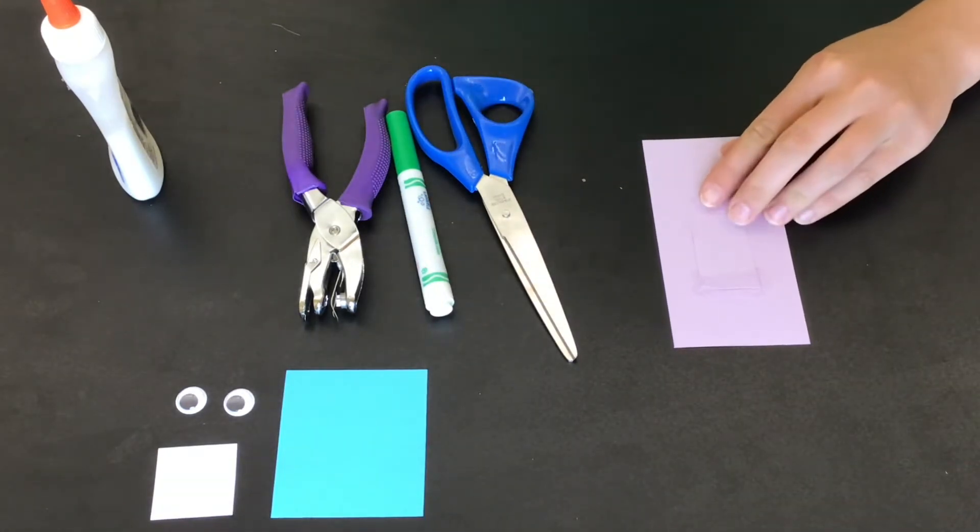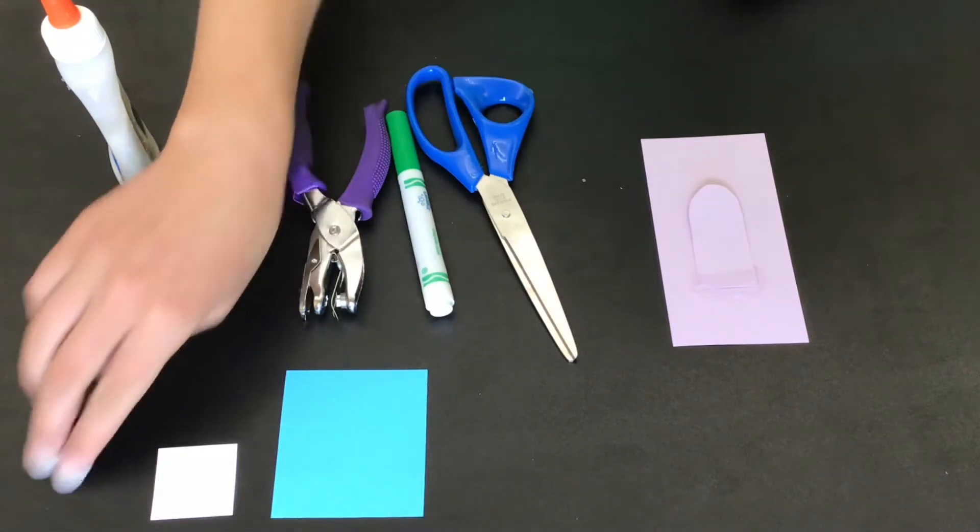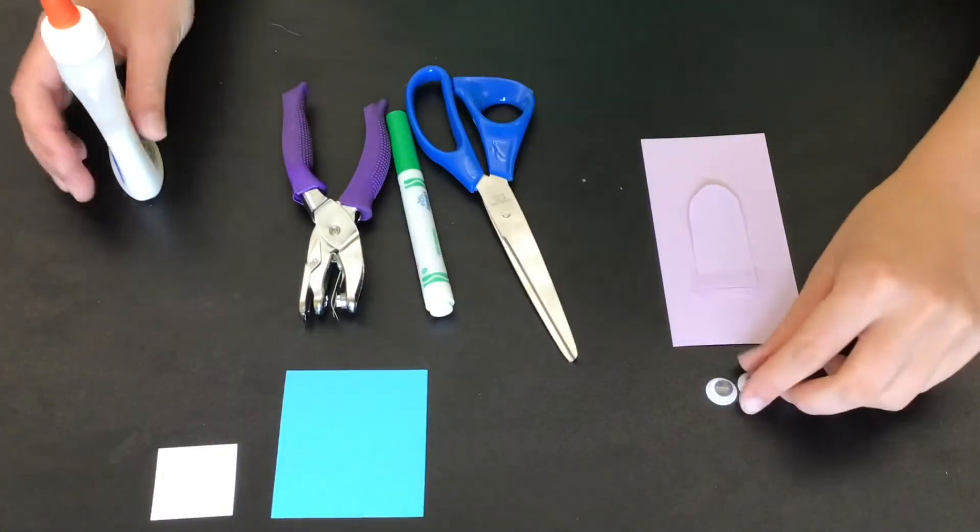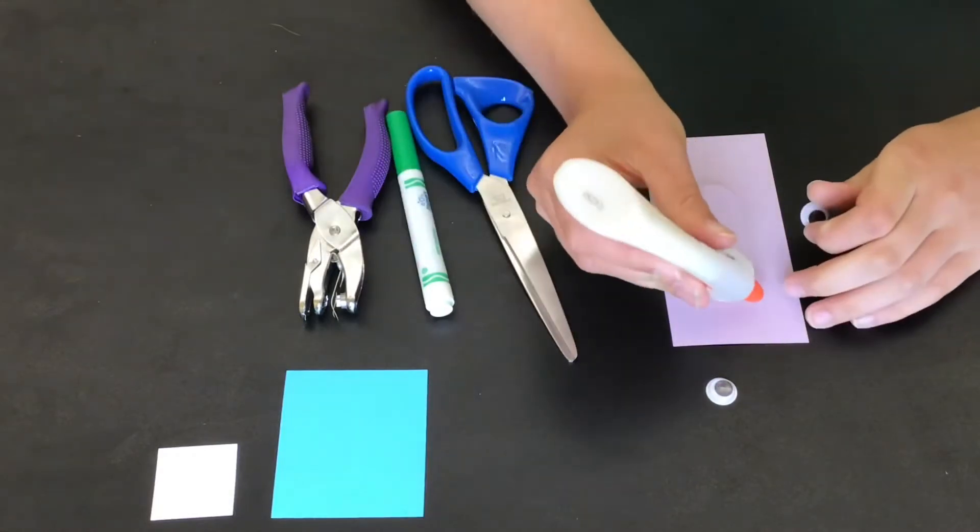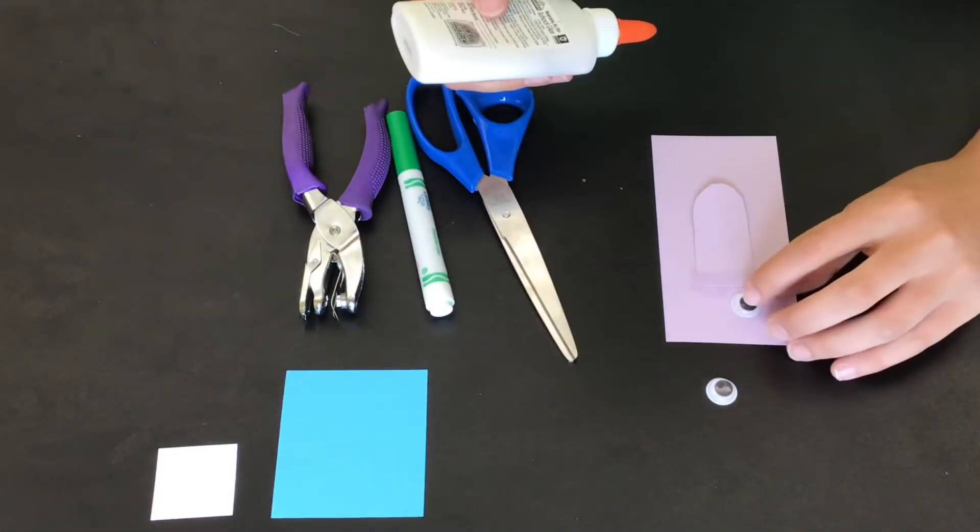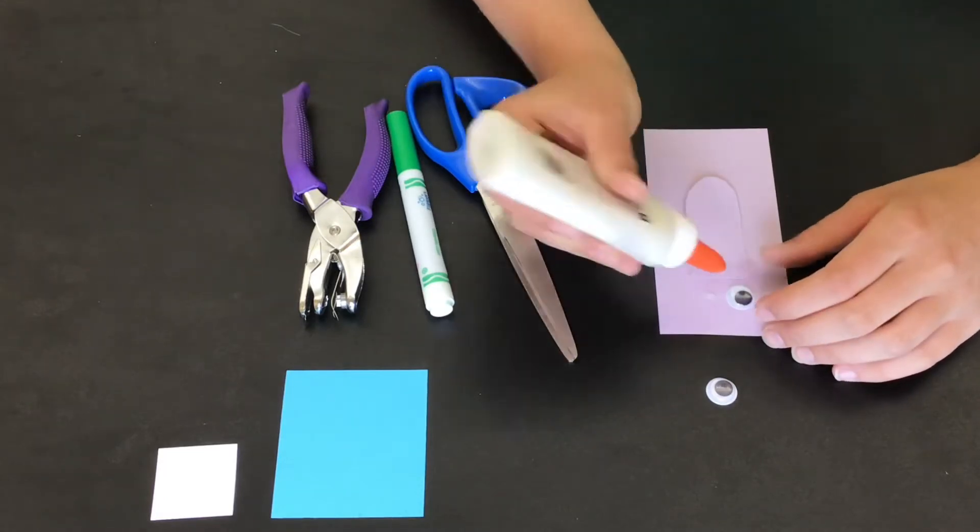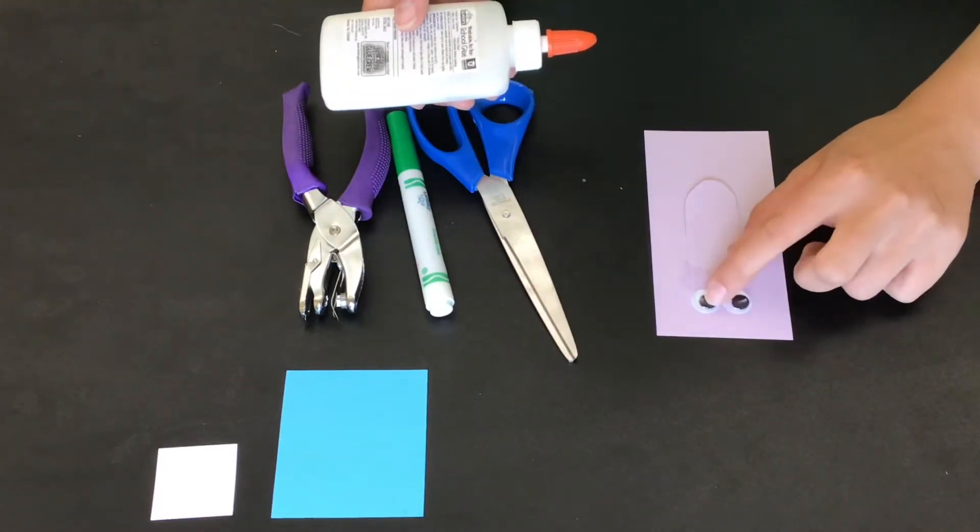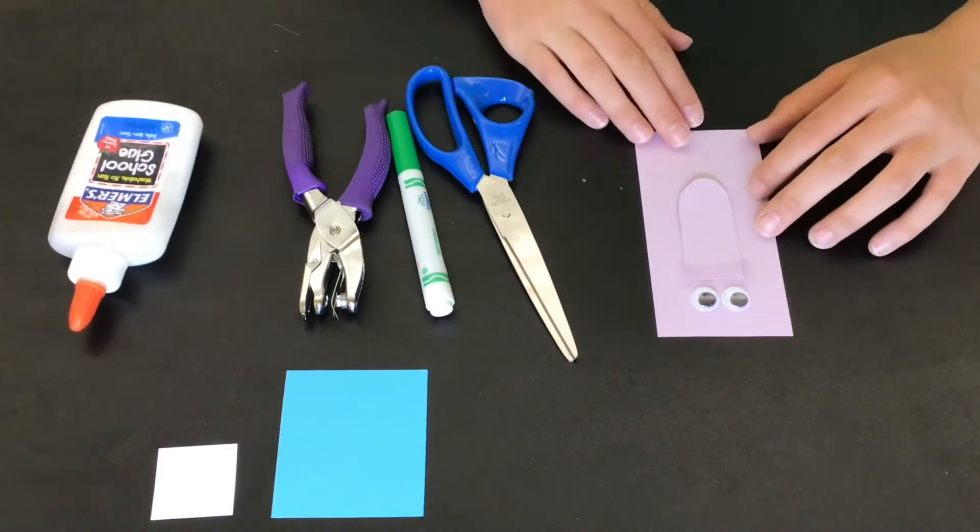Next, you are going to take your two googly eyes and put those on. You can put them wherever, it's your monster, you can choose. But I'm going to put mine right above my nose so that it looks like a monster, kind of like a human face with eyes and nose, but really you can put it anywhere.